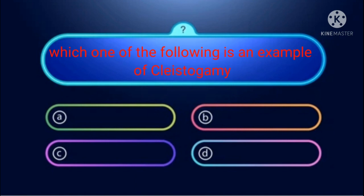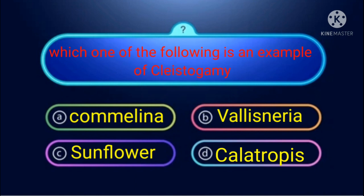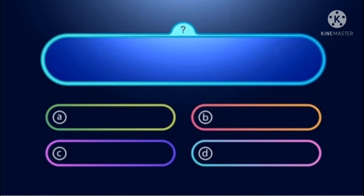Next question: Which is an example of cleistogamy? Cleistogamy means pollination in a completely closed flower. For example, Commelina produces closed flowers in which pollination occurs — this is called cleistogamy. The right answer is Commelina.